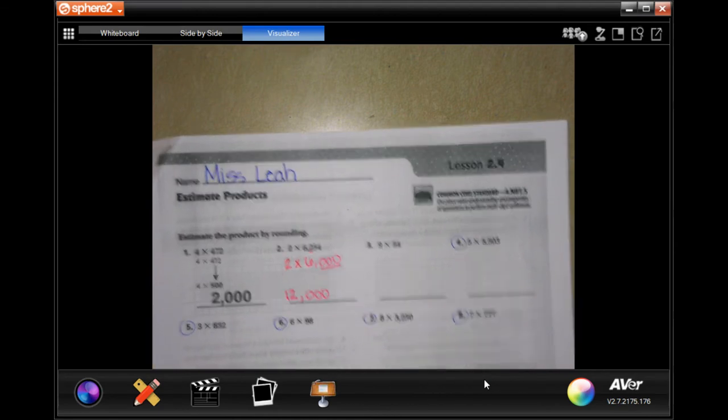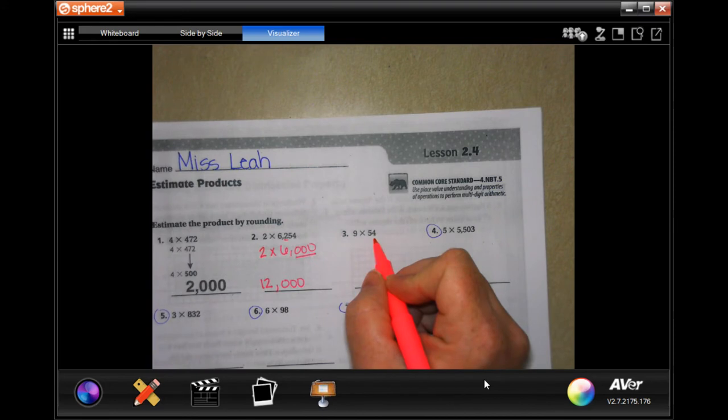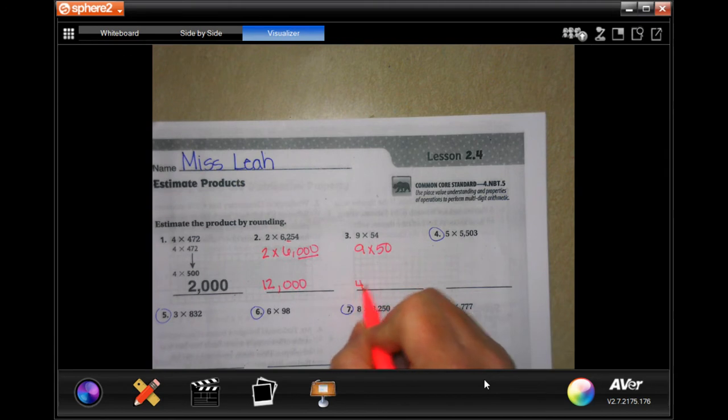We're going to do this one. 54 would round to 50. So now I have nine times 50. Well, nine times five is 45, and then I got to add that zero on, 450.